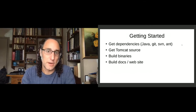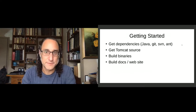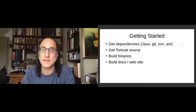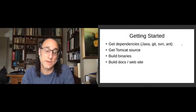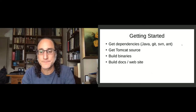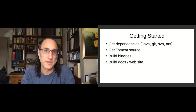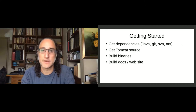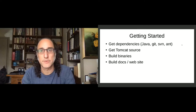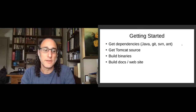In order to get started, you need a couple of dependencies. You'll need Java — specifically a Java Development Kit, not just the runtime, because you need the compiler. You'll need a Git client for revision control. And for some parts of Tomcat, you'll need the Subversion client as well, because we haven't migrated all of our repositories to Git yet. You'll also need Apache Ant, which is the build tool.